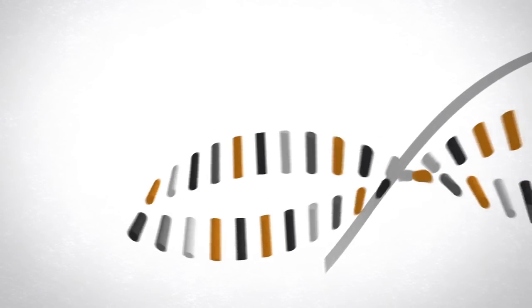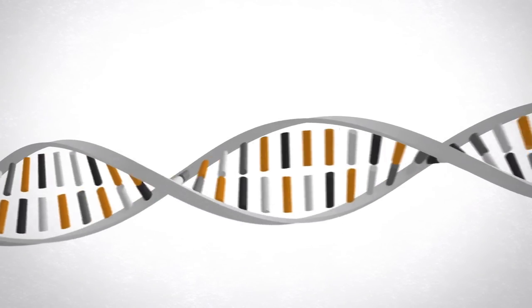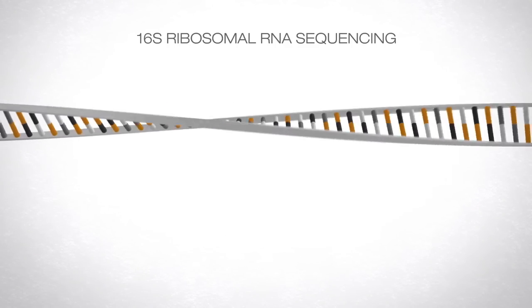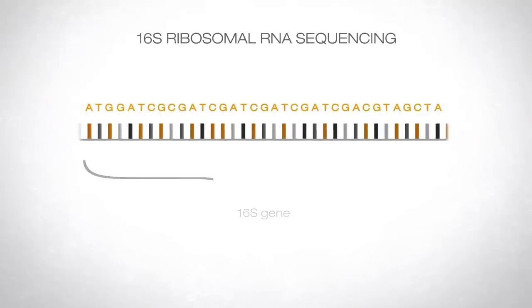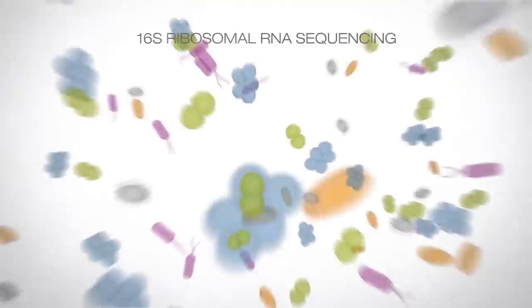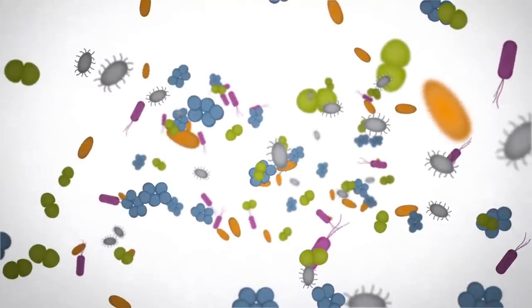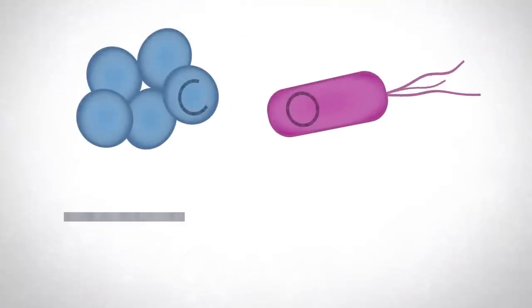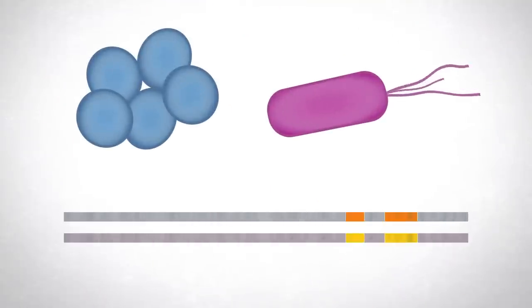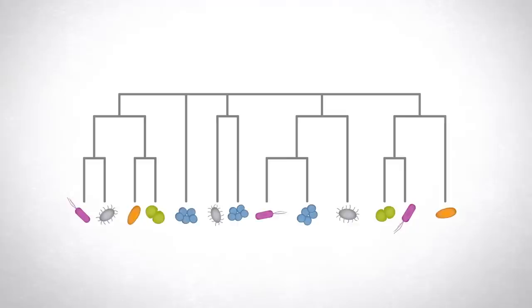Highly complex bacterial communities are commonly identified using 16S ribosomal RNA sequencing. The 16S rRNA gene codes for part of the ribosome found in bacterial cells. Sections of this gene are conserved across the genomes of all bacteria species, but variations within the coding sequence are used to tell different species apart and even how they're related to each other.